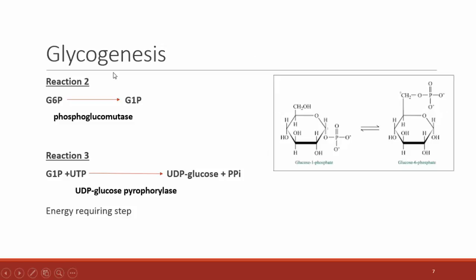In reaction 2, glucose-6-phosphate is transformed to glucose-1-phosphate — the phosphate is simply moved to a different carbon. The enzyme is phosphoglucomutase, which makes sense because we're mutating the position of the phosphate. This reaction is reversible, and the only difference between the two molecules is the carbon position of the phosphate group.